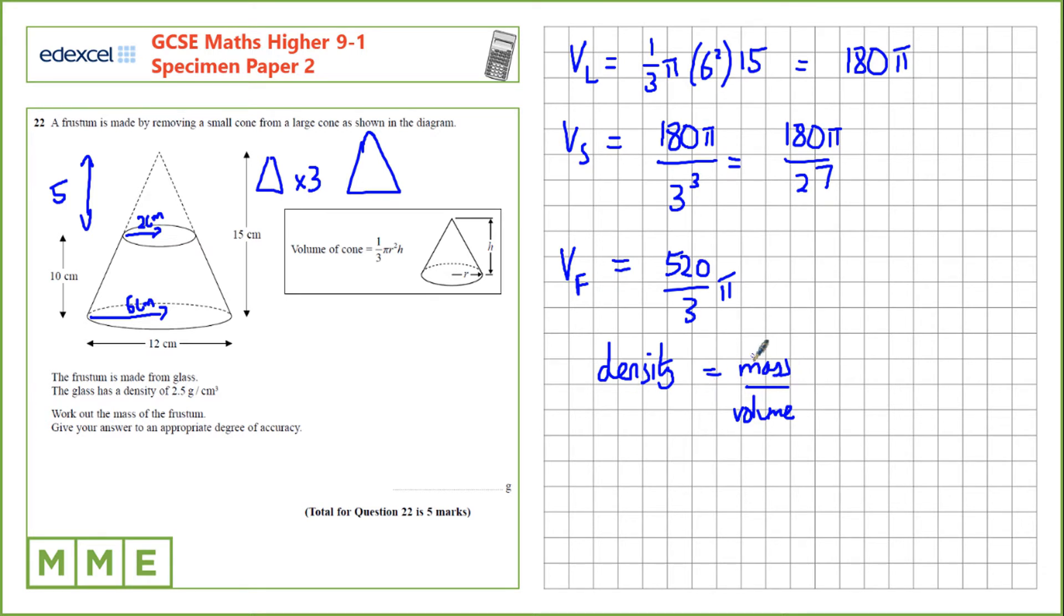So, if we want to know the mass, we need to rearrange. So, that's mass is density times volume. We're given the density as 2.5 grams per centimeter cubed. So, we need to multiply the value of volume in centimeters cubed. That's 520 pi over 3. And that gives us an answer of 1,400 grams, two significant figures.